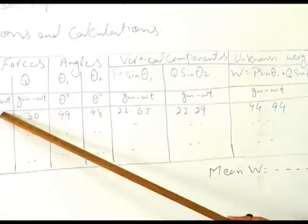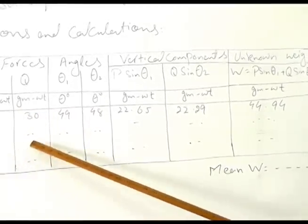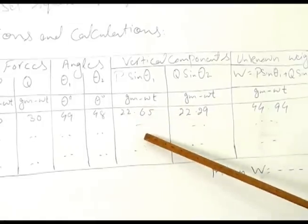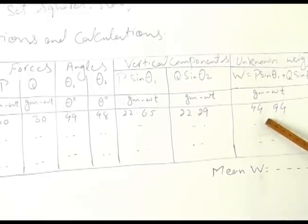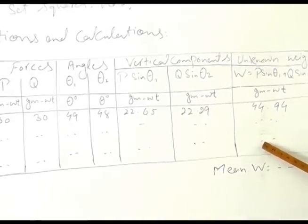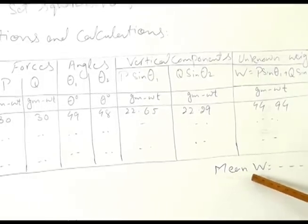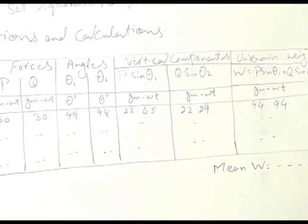By adding more weights we will take second and third readings on the same procedure by measuring angles and finding out the vertical components. We will get three values of unknown weight. After completing our observations, we will take the mean value of unknown weight W which will be in gram weights.